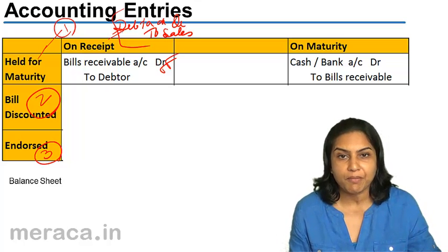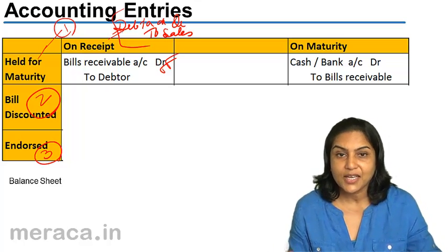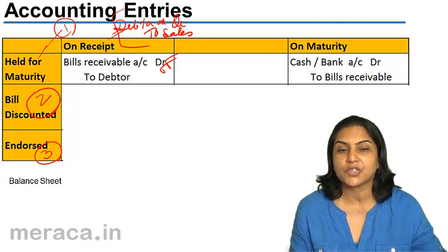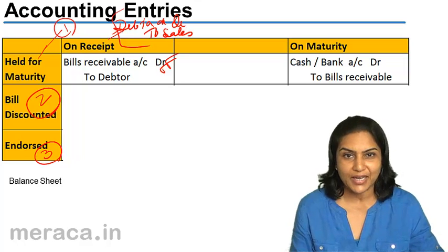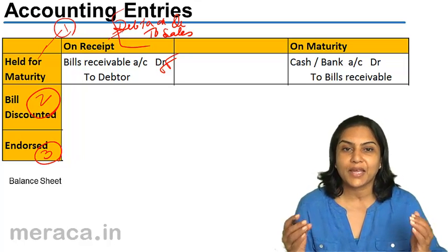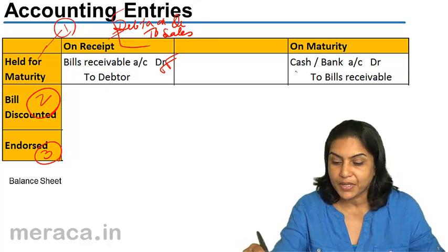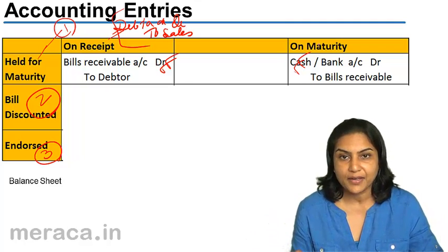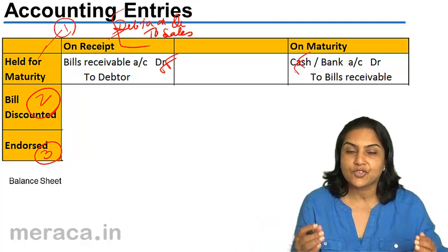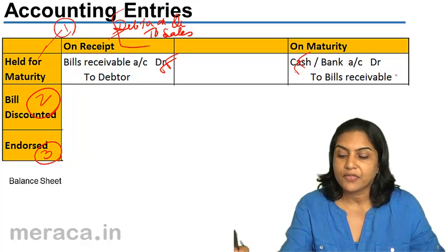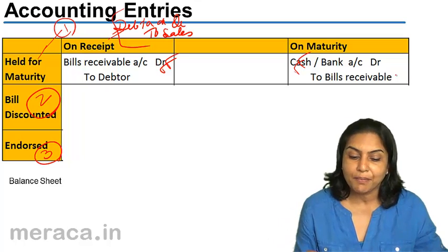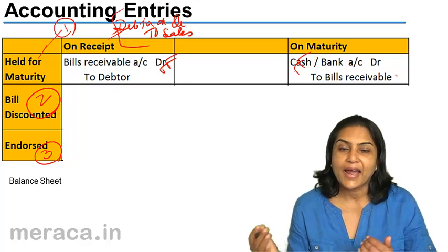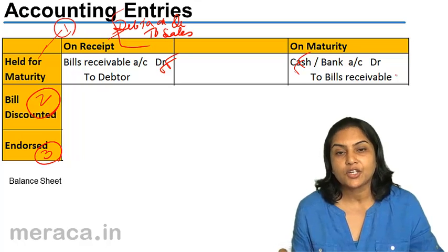Let us say we hold this bill for three months. At the end of three months, the bill will be presented for payment. If we represent the accounts of X, we will take it to Y and Y will pay us the money. The entry then would be cash or bank account debit to bills receivable. The bill is cancelled on maturity. Once the three months has elapsed and the bill has expired, money is received — bank account debit to bills receivable, therefore bills receivable account credit. So for receiving the bill: bills receivable account debit to debtor; while in cashing the bill: cash account debit to bills receivable.